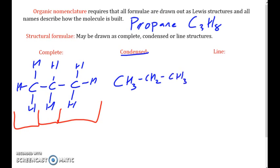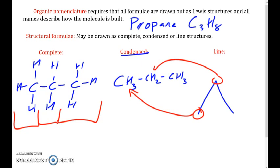There are even faster ways to write this out. We can use the line method, and the line method for propane looks like this. This tip right here represents the CH3. This middle piece represents CH2. And this last piece represents CH3. We're going to be using all three of these ways to label them as we go throughout our unit.